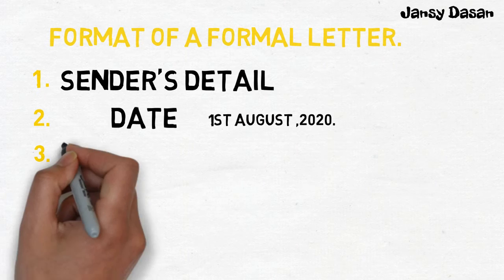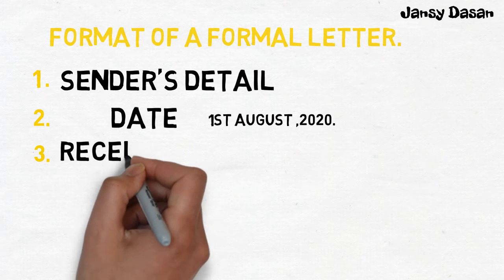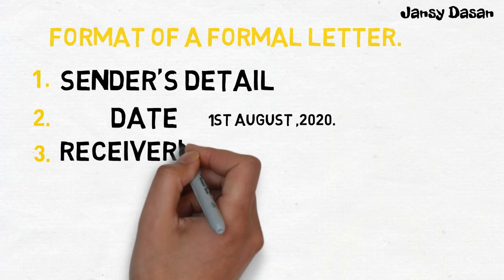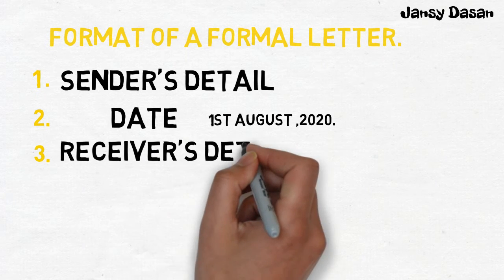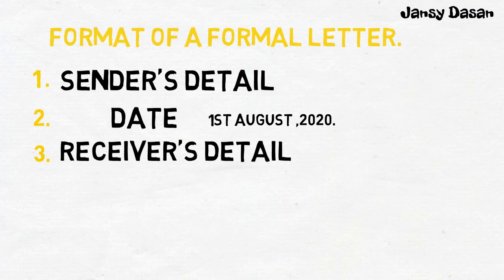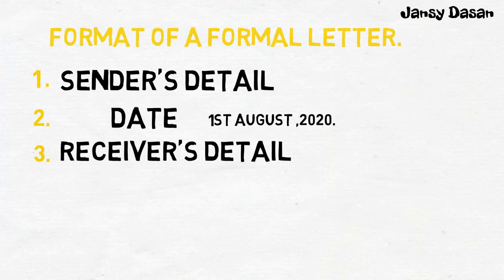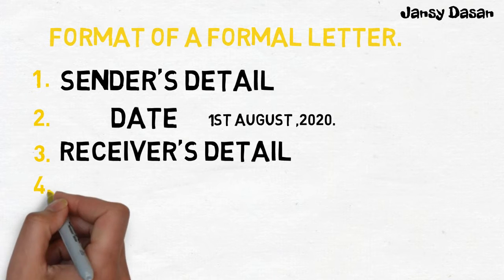Third one is receiver's detail. After leaving some space, we write the receiver's address. Make sure to write the official title, name, position, etc. of the receiver as the first line of the address.